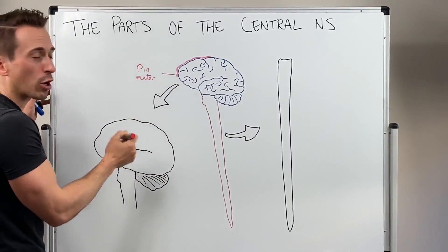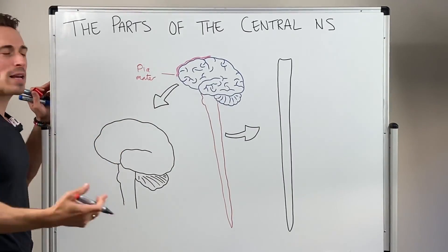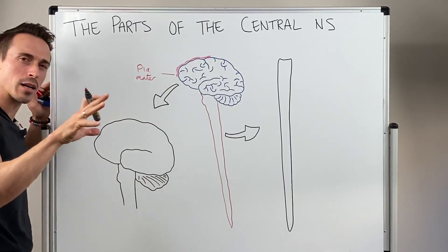And pia means soft, mater means mother. It's the soft mother. Basically it's like tissue paper that's stuck to the brain itself.